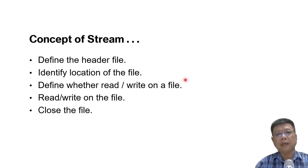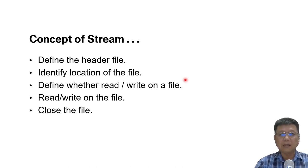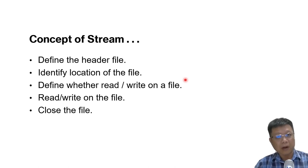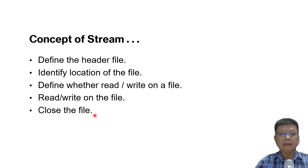The concept is quite easy. First you have to define the header file. After you have defined the header file, you must know where that particular file is located in your PC or directory. Then you have to define whether you want to write to the file or read from the file. After that, start your coding, and then lastly you have to close the file.